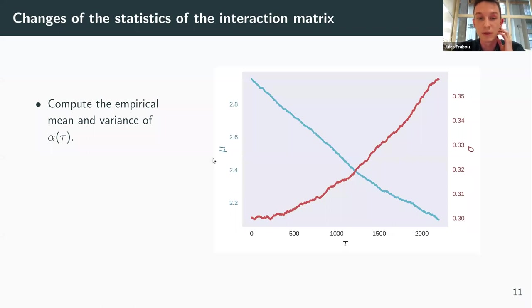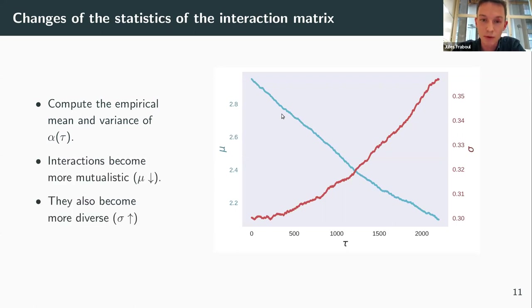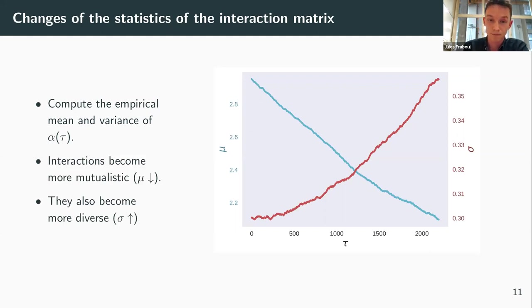Here mu is essentially the mean of the interaction and sigma squared is the variance of the interaction. We see that mu (in blue) decreases with generation — so interactions become more mutualistic — and sigma increases, so interactions become more diverse.